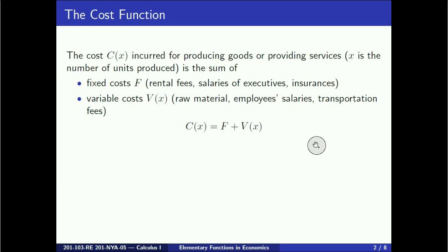Overall, C is the sum of F, the fixed costs, and V, the variable costs, which depends on the number x of units produced.